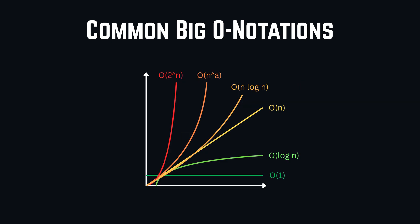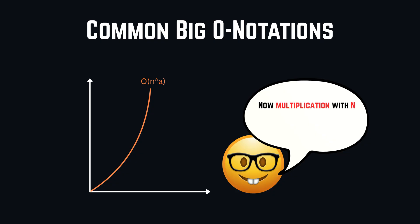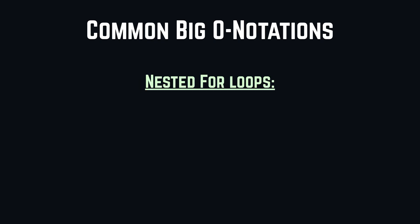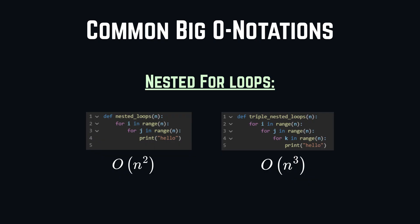O of N to the power to A. Polynomial time. This case occurs when the number of operations grow as the power of the input size. This case is the most typical case when we have nested for loops, meaning loops in loop. For example, a loop in a loop would be O of N squared, and a loop in a loop in a loop would be O of N cubed, and so on.